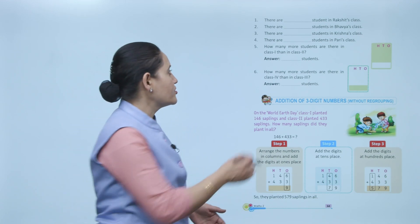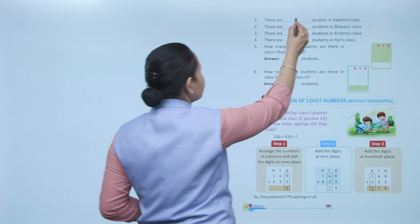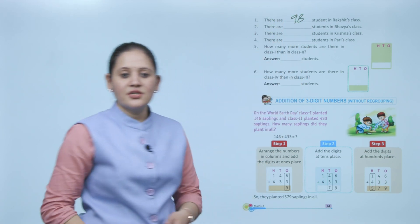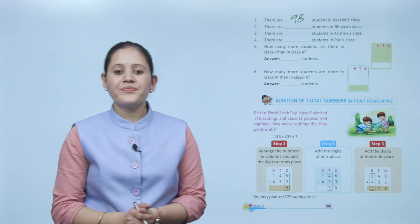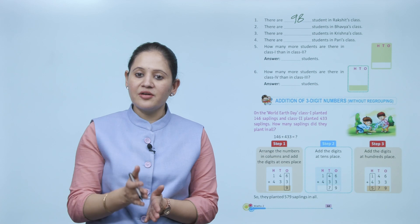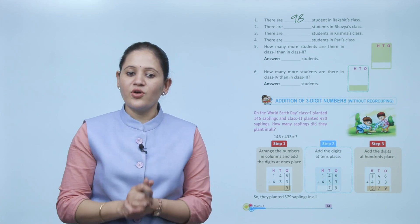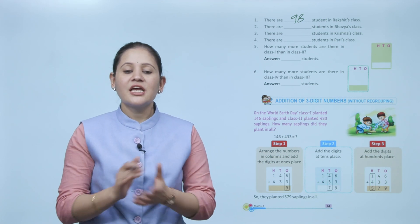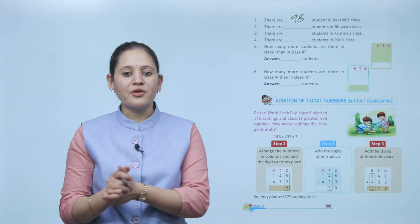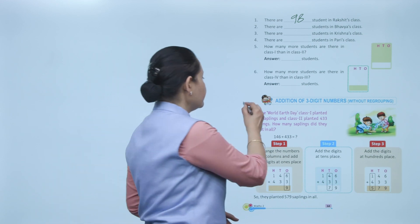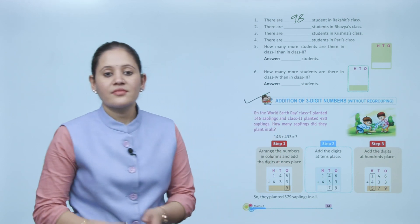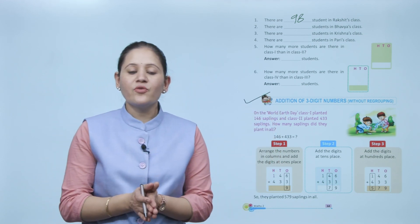Rakshita is in class 2, so there are a total of 98 students in class 2. This is how we count the number of students and answer the following questions. Next is addition of three-digit numbers without regrouping.